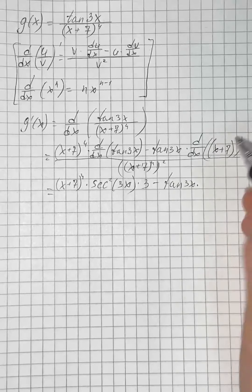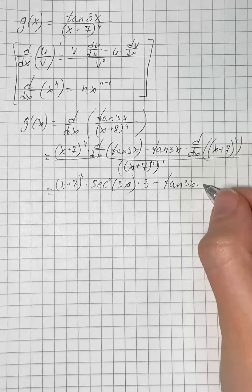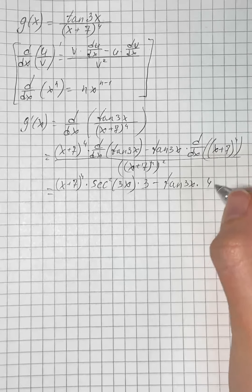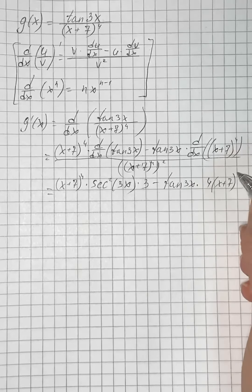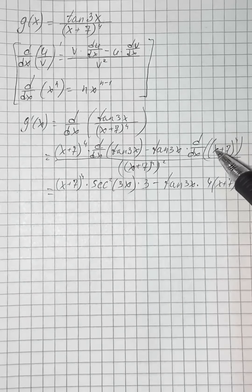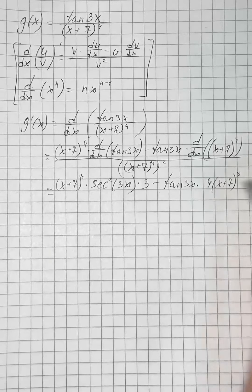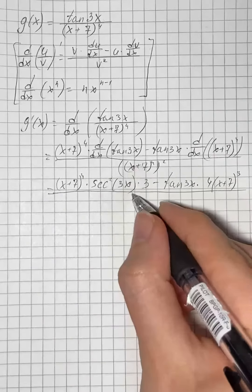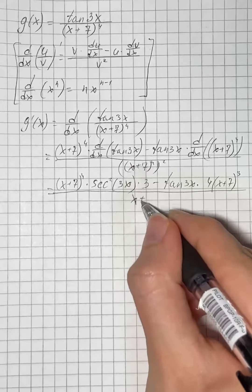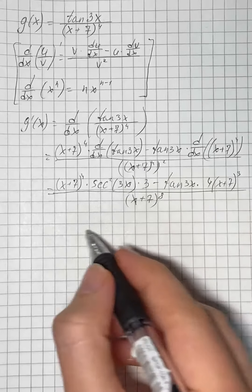We take the derivative of the whole function, which gives 4 times x plus 7 cubed, then multiply by the derivative of x plus 7, which is just 1. In the denominator we have x plus 7 to the eighth power.